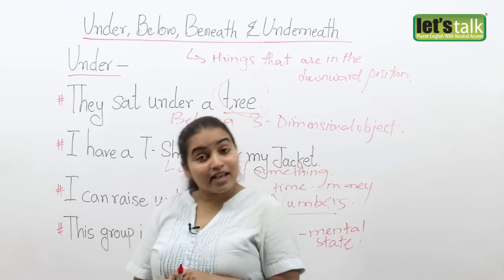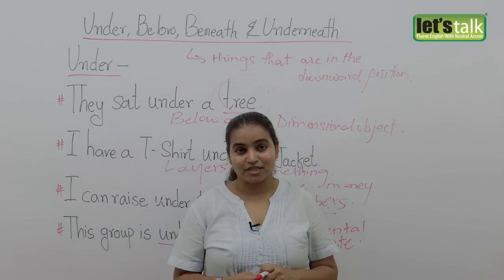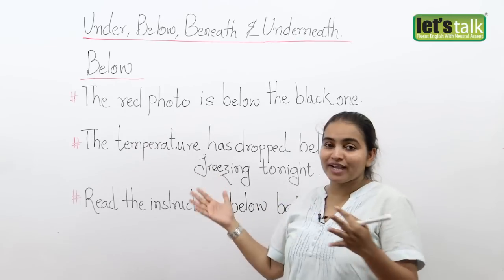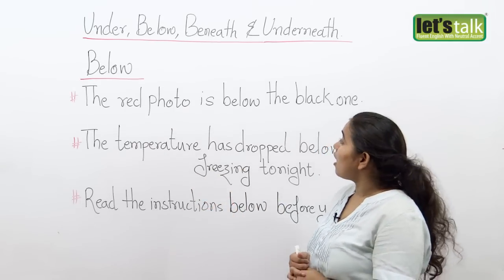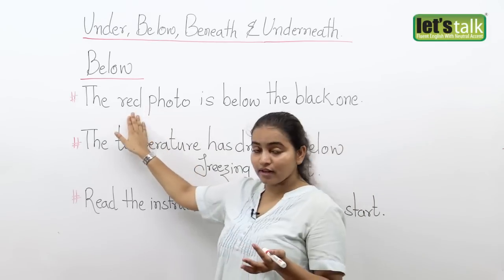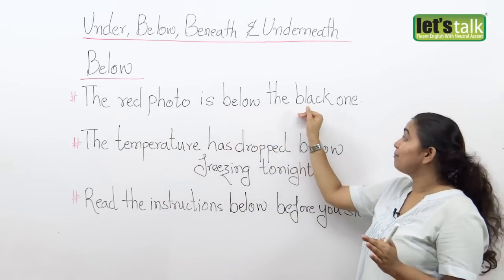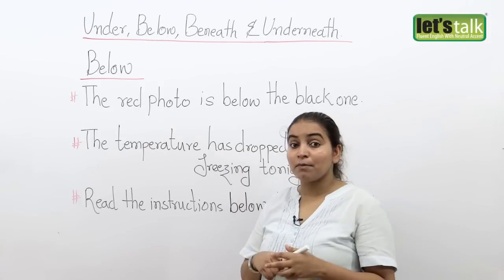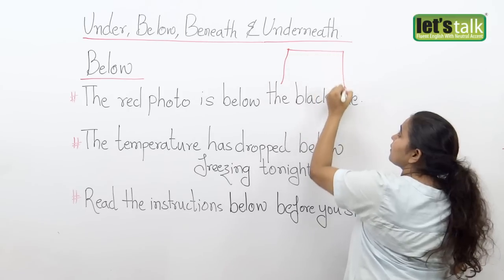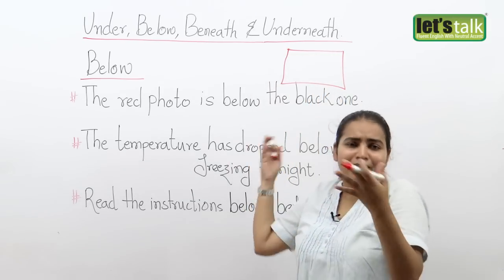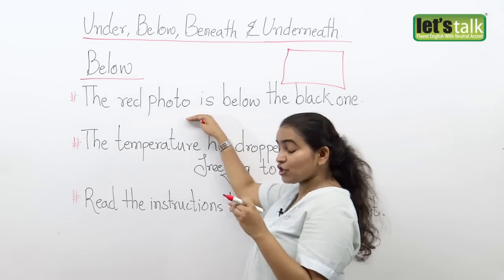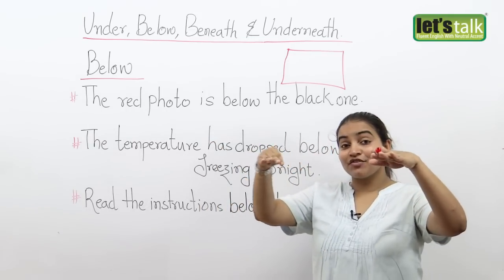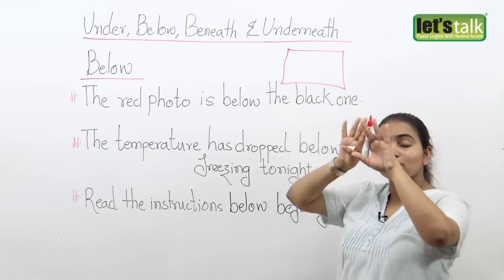Now we will deal with the next word, which is below, and see what contexts it can be used in. The word below can also be used in different contexts. Let's look at our first sentence: the red photo is below the black one. Now why do I use below in this context? I'll help you understand this by means of a diagram. This context talks about comparing the level of one thing against the other, provided both of them are on the same plane.